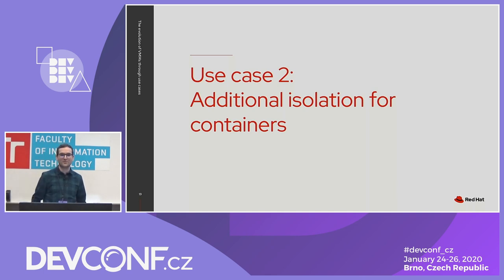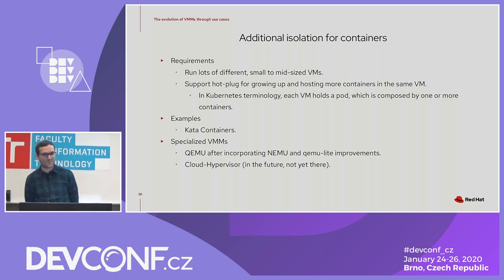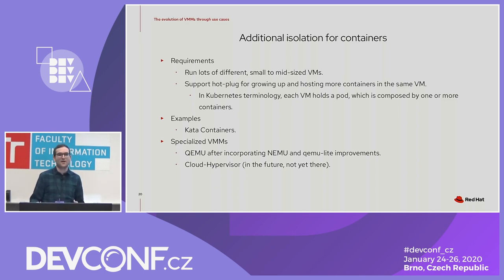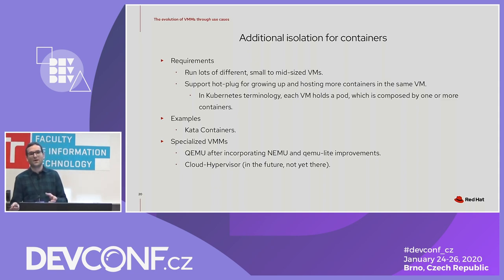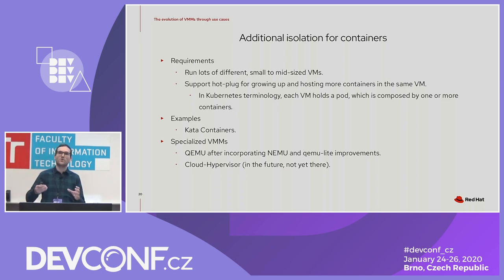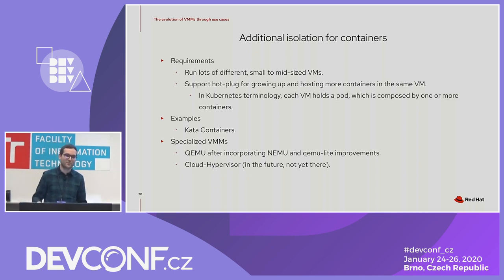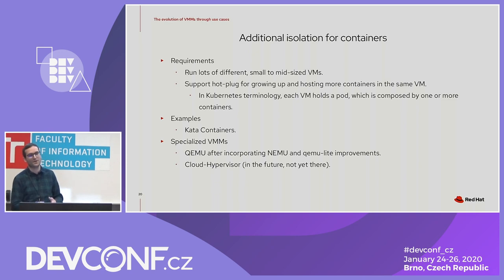The second use case is additional isolation for containers. The requirements are basically being able to run lots of different small to mid-sized VMs. We also need to support hotplug for growing the VMs. In Kubernetes terminology, each VM doesn't hold a single container but a pod, and a pod can be composed of one or more containers. When the first container is created, the VM is created only with that container's resource requirements, and when a second container runs on the same VM, it is expanded via hotplugging additional vCPUs and vRAM. The main example is Kata Containers, and the specialized VMMs include QEMU after incorporating NEMU and QEMU-lite improvements, and Cloud Hypervisor.